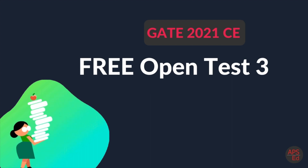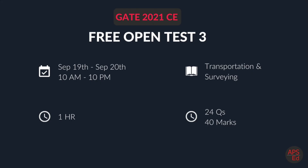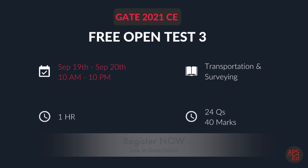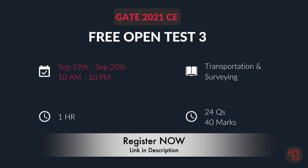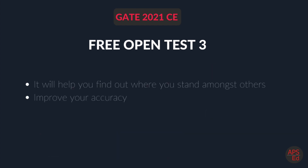We are releasing Free Open Test 3, scheduled for September 19th and 20th, so we have a lot of time to prepare. It is on transportation and surveying and is completely free of cost. All you have to do is go to the link in the description and register. You can attempt the test on a laptop or download our app APACD from the Play Store.